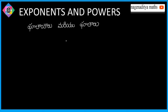Exponents and powers are used when we deal with very large numbers. For example, the age of our universe — if you write it out, you need many zeros: hundreds, thousands, and millions. It is 12,000,000,000 years. It is difficult to write and say this number easily.